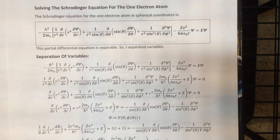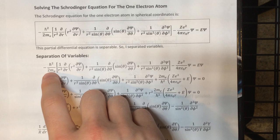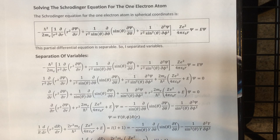So I separated variables. The first thing I did was subtract this term to the other side, multiplied by a minus sign, then multiplied by the multiplicative inverse of this factor, which gave me that equation. Then I multiplied by r squared which got those terms ready for separation of variables, specifically separating the radial and angular parts off.